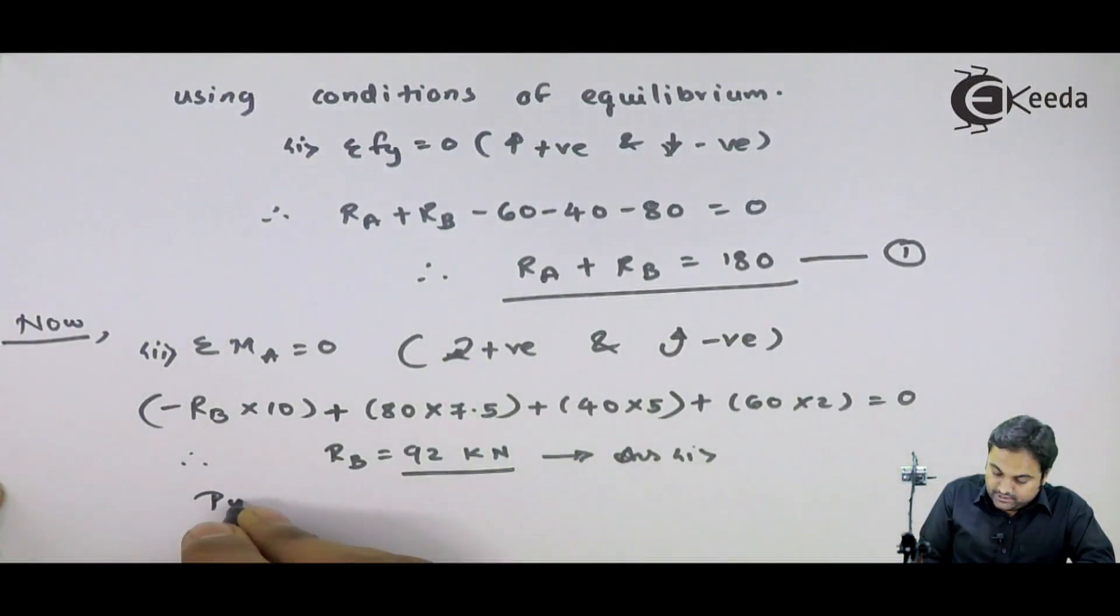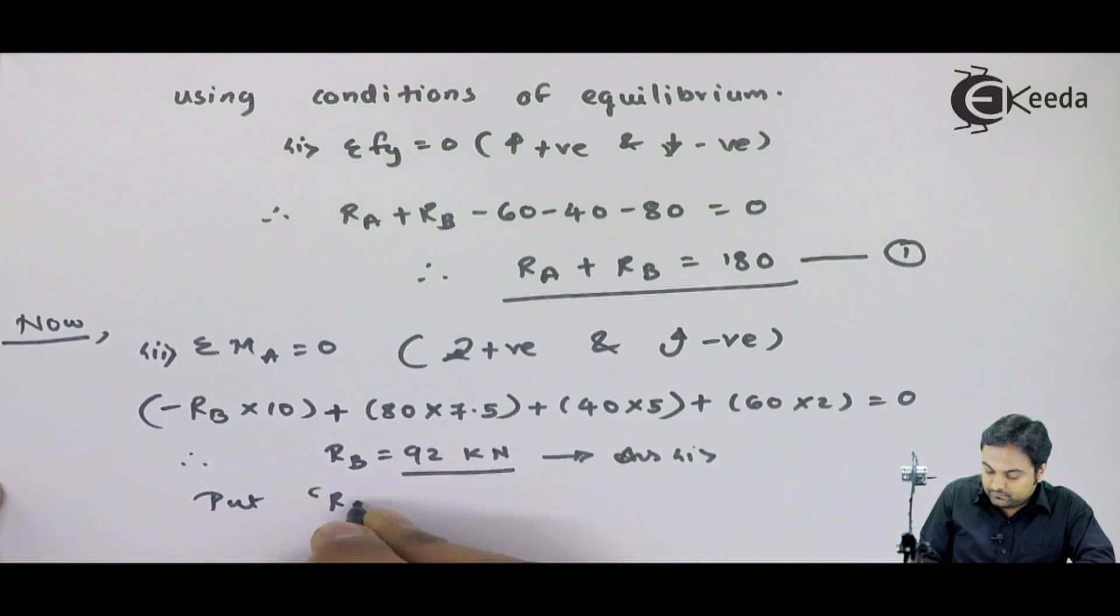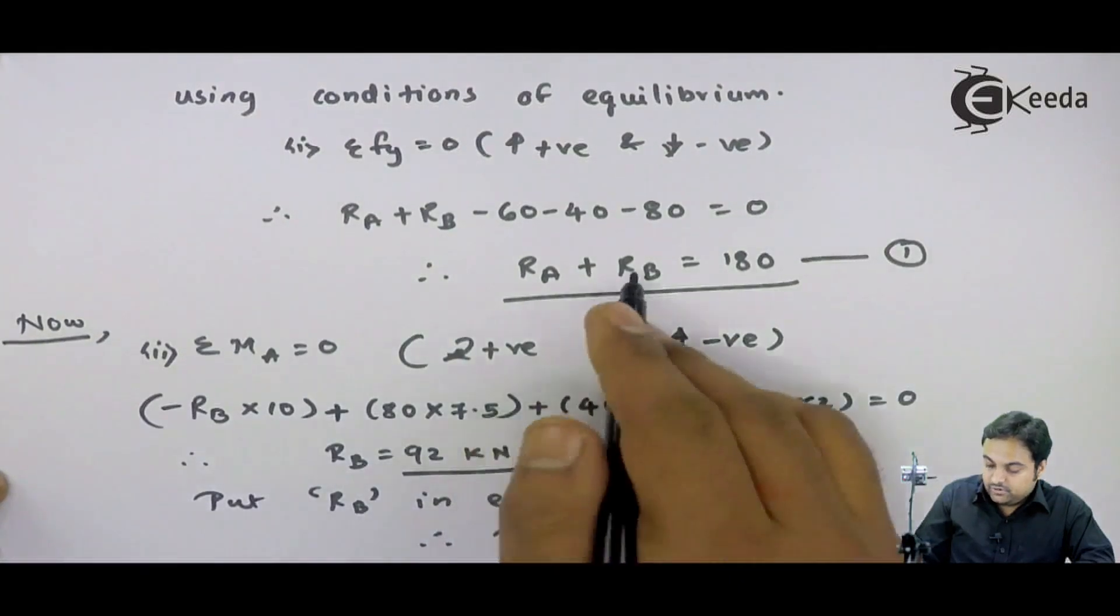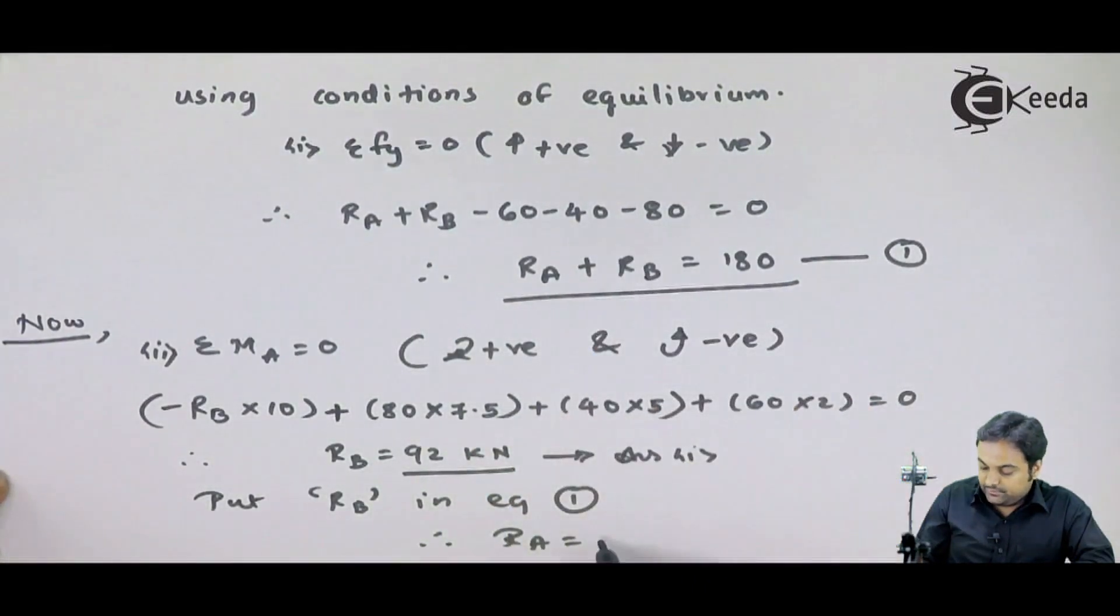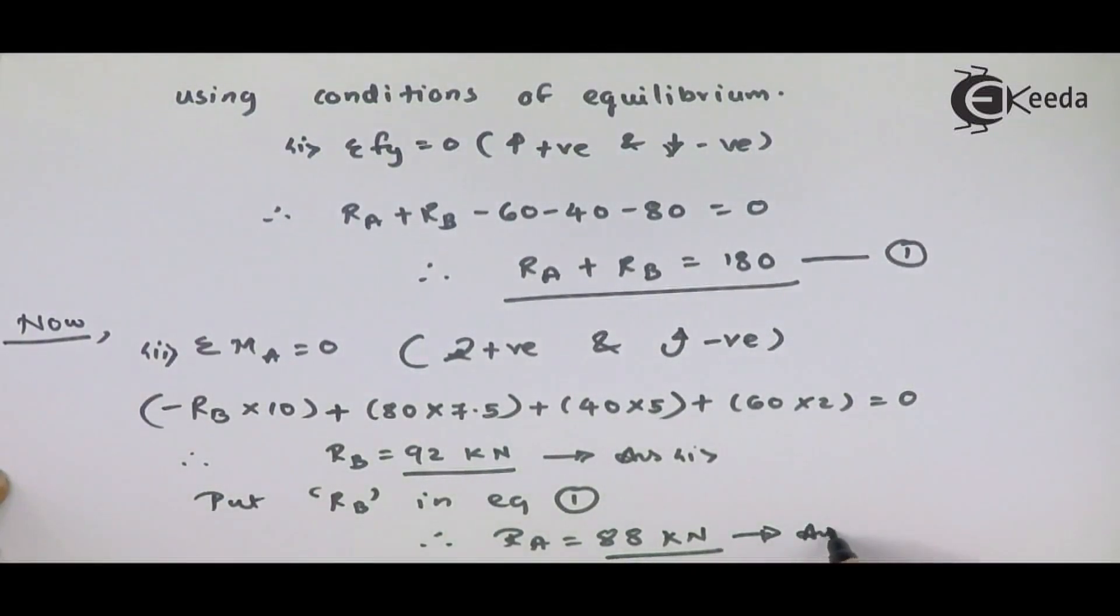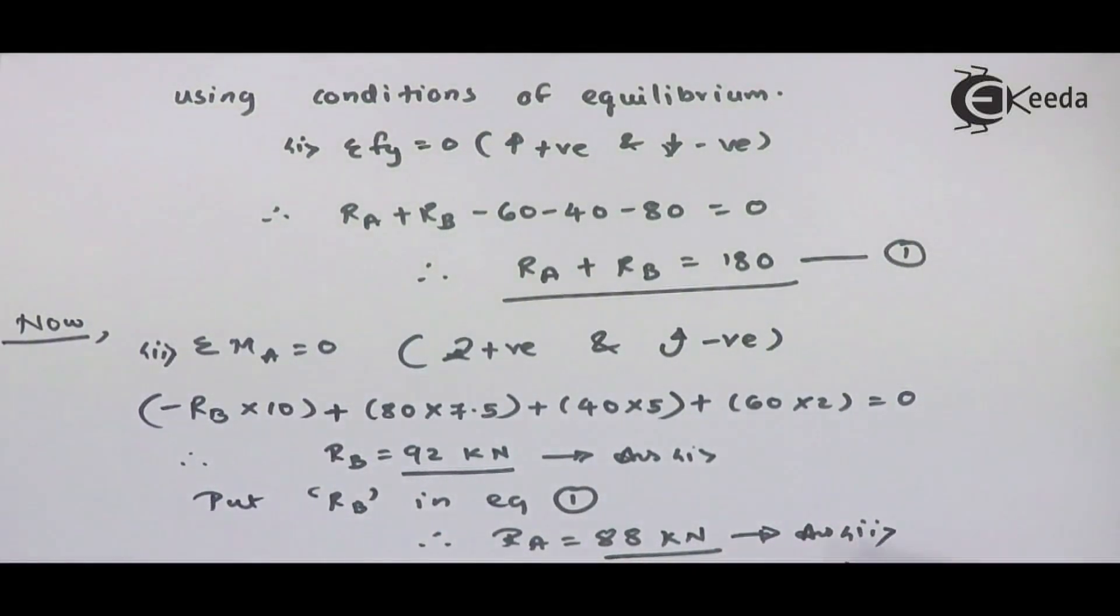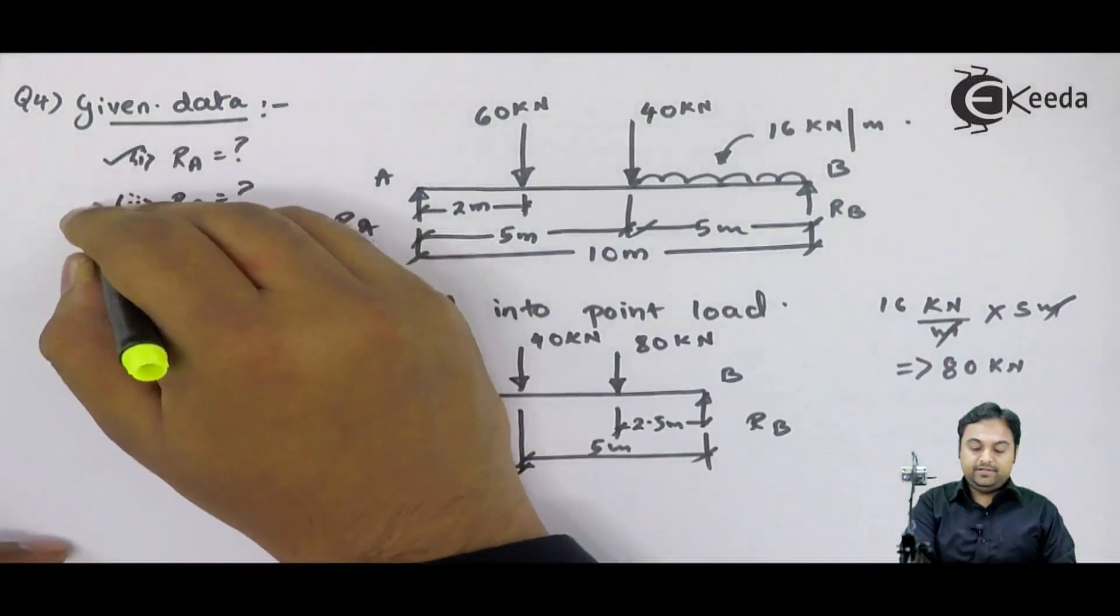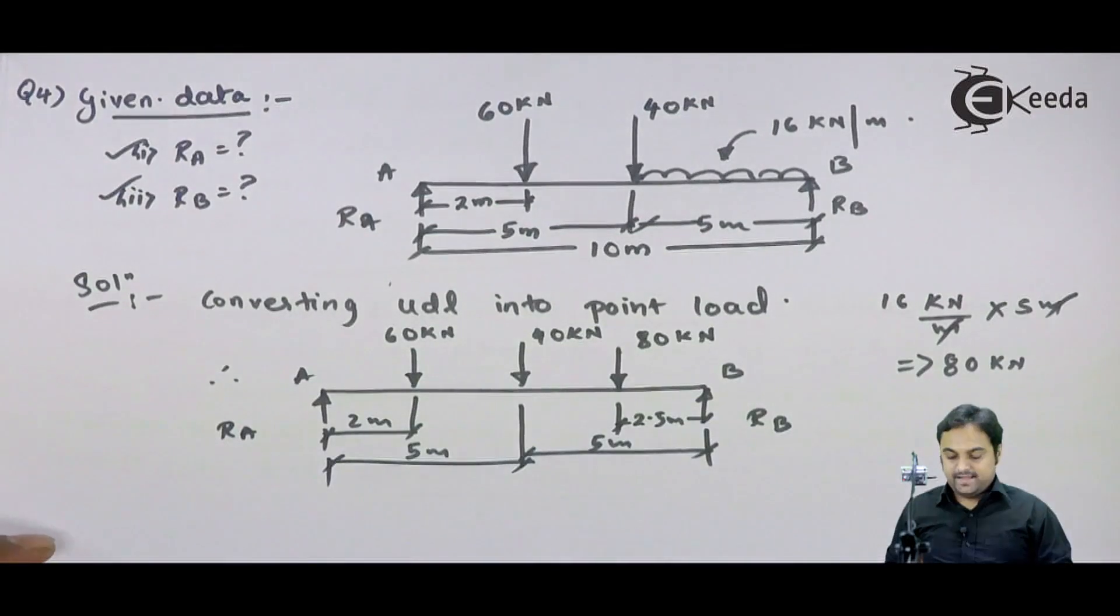And if I put RB in equation 1, therefore RA will be 180 minus 92, means RA will be 88 kN. And in this question, we had to calculate the support reactions RA and RB, and we have solved them and completed them.